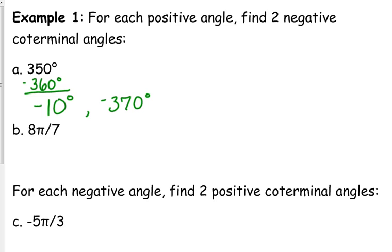Now radians can be a little bit trickier, but really they're not. If you look at them from a fractional standpoint, they're really not that bad. If we were subtracting 360 degrees when we were in degrees, how much would we subtract in radians? 2 pi. 360 degrees is the same as 2 pi.